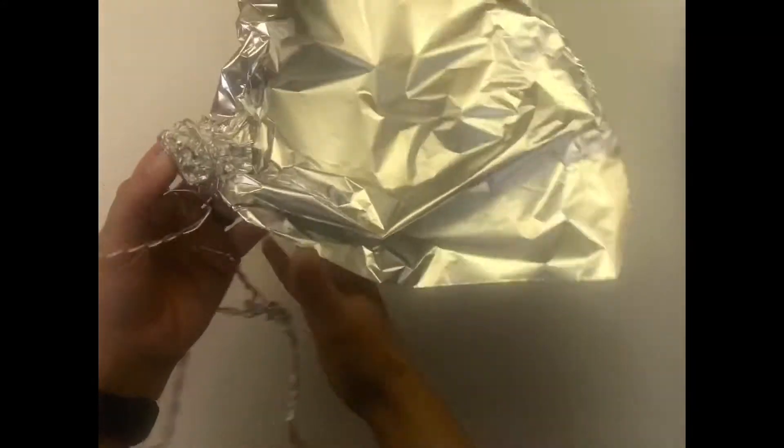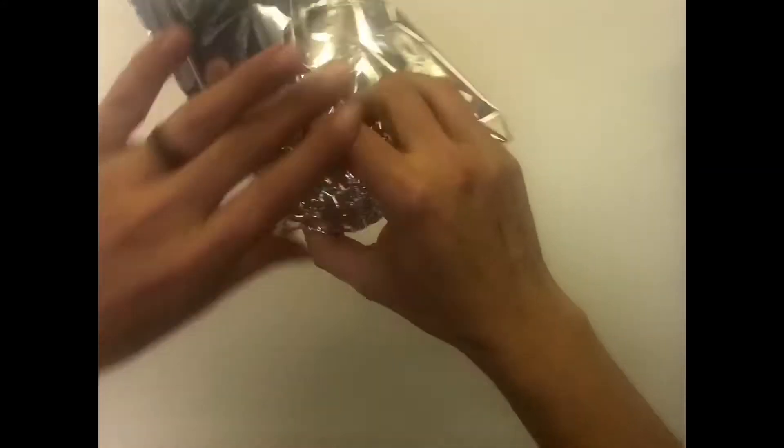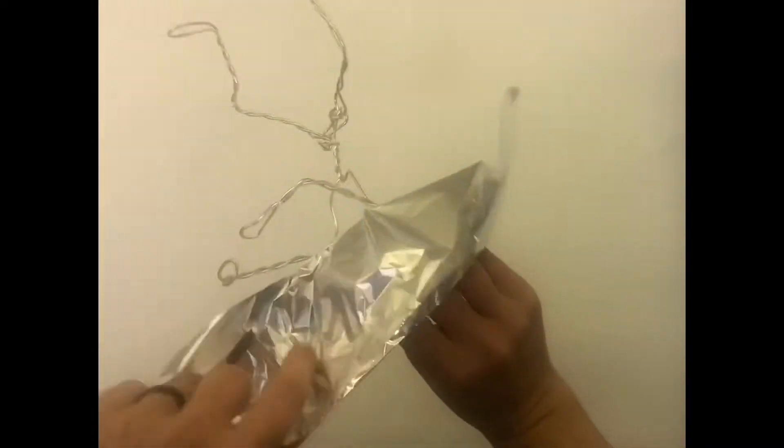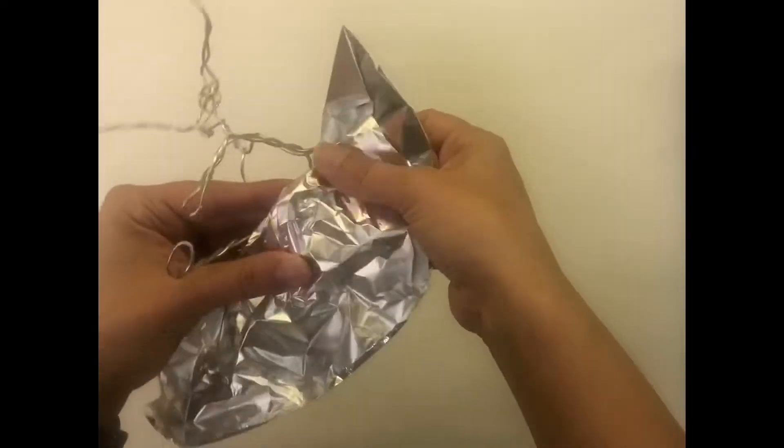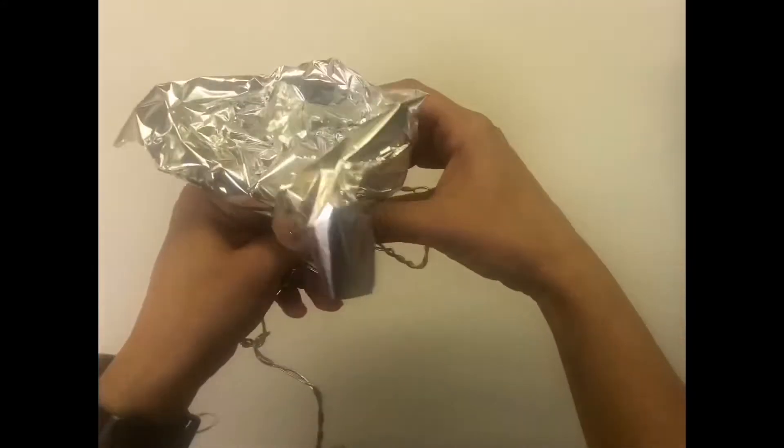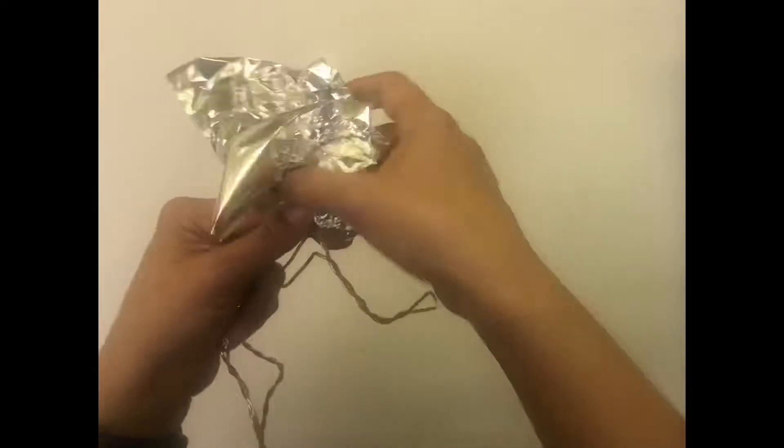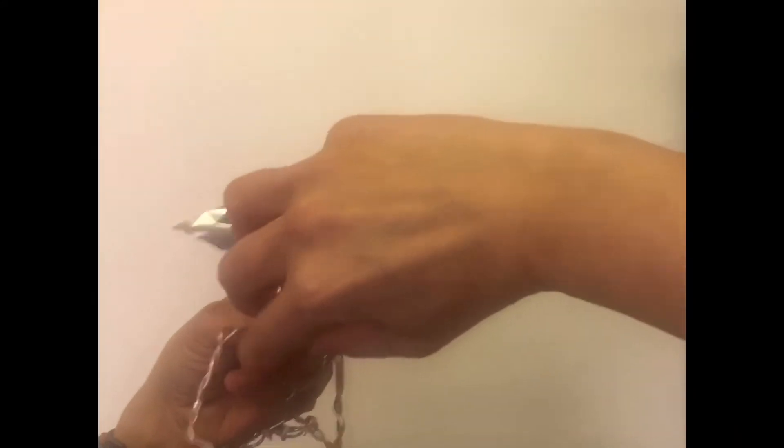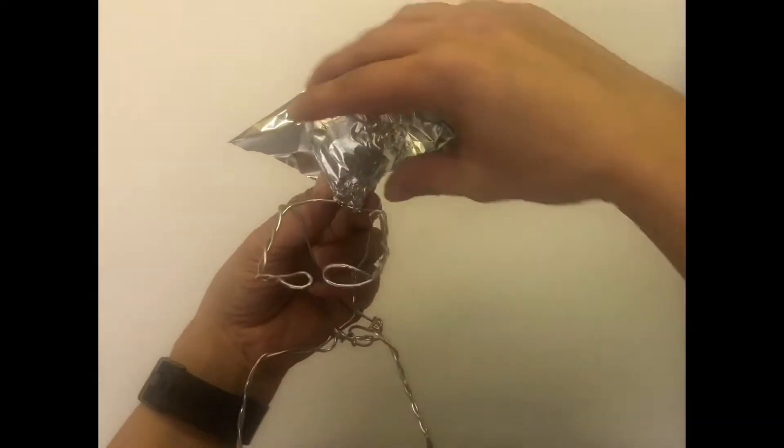And then I'll take the cape or the tail in the back and I'll start using that to continue forming. And by wrapping this over the head it makes it so I don't have any loose pieces flying around. I'm also forming the neck as I go.